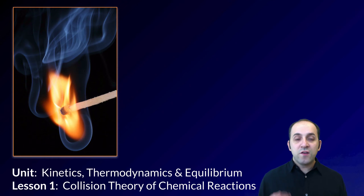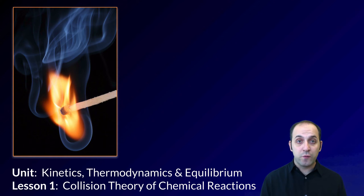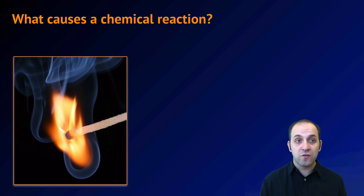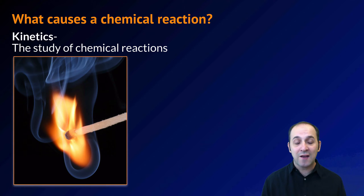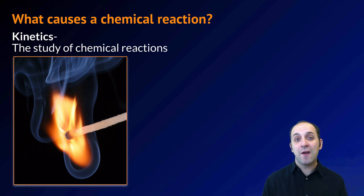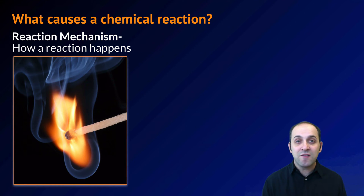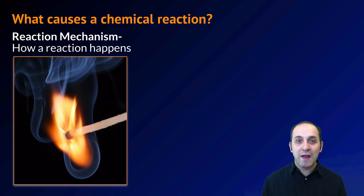Let's go back to the lesson. We're going to start at the beginning, which is really: how do substances react with each other? We're going to talk about what's called the collision theory of chemical reactions. So what causes a chemical reaction? We know that it involves reactants going to products, but what happens to those reactants that gets them to react? The study of this is what's known as kinetics — the study of the energy changes that happen over the course of a chemical reaction. What kinetics is really interested in is figuring out the reaction mechanisms: how a reaction happens.